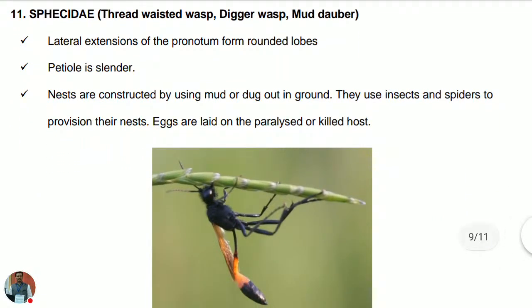Thread-waisted wasps, digger wasps, and mud daubers (Sphecidae): the lateral extensions of the pronotum form rounded lobes. The petiole is slender — hence the name thread-waisted wasp. Nests are constructed using mud or dug out in the ground. They use insects and spiders as provisions for their nests and lay eggs on the paralyzed or killed host.